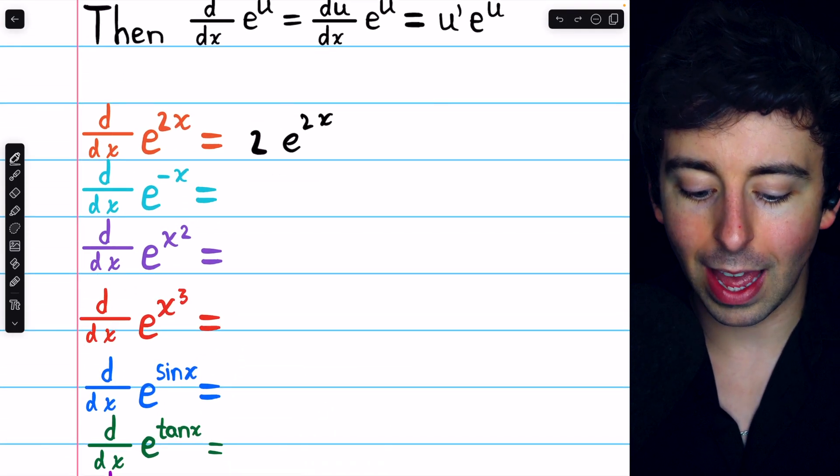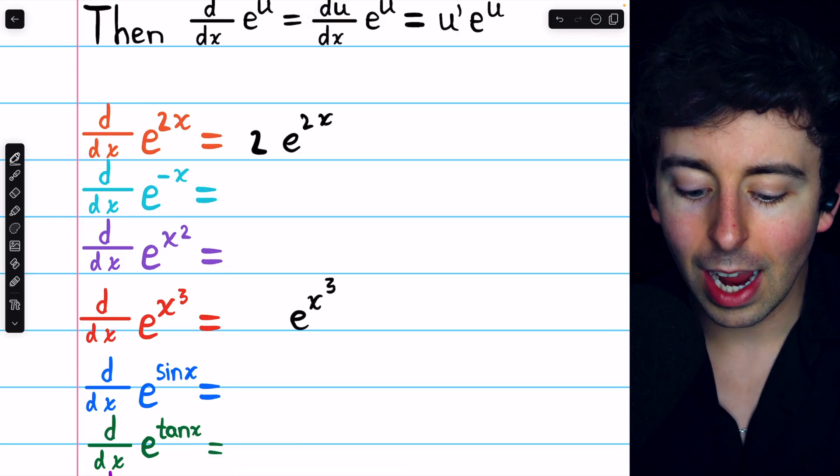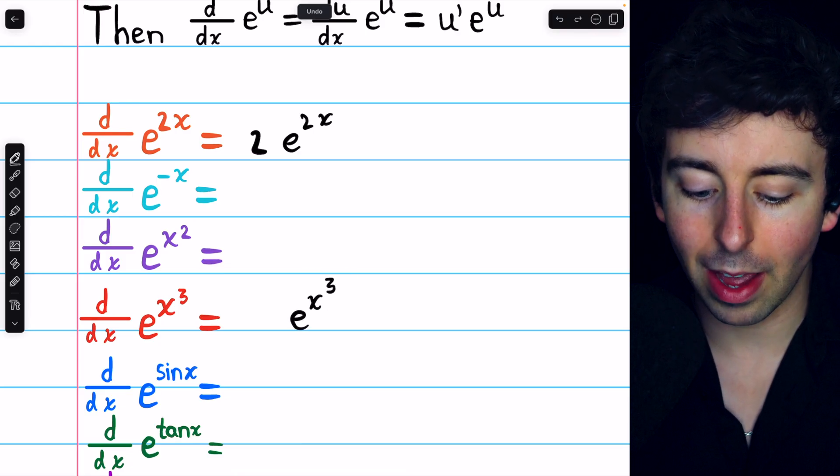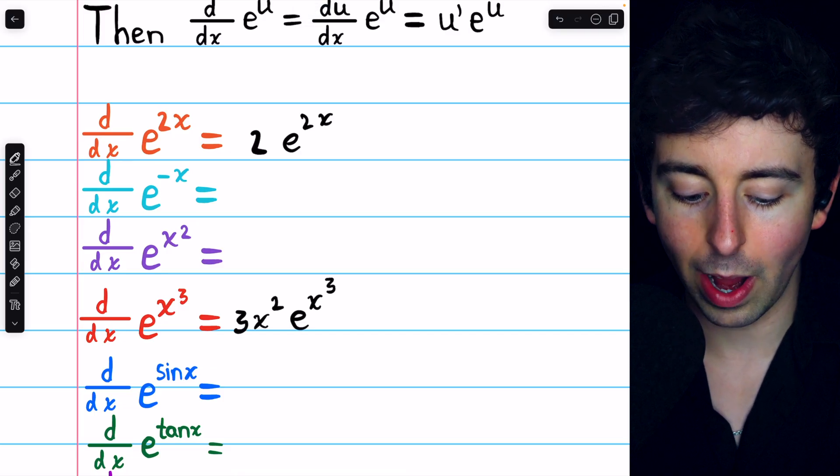What about the derivative of e to the x cubed? Just leave the e alone, e to the x cubed, and then multiply by the derivative of that function in its exponent. The derivative of x cubed is 3x squared.